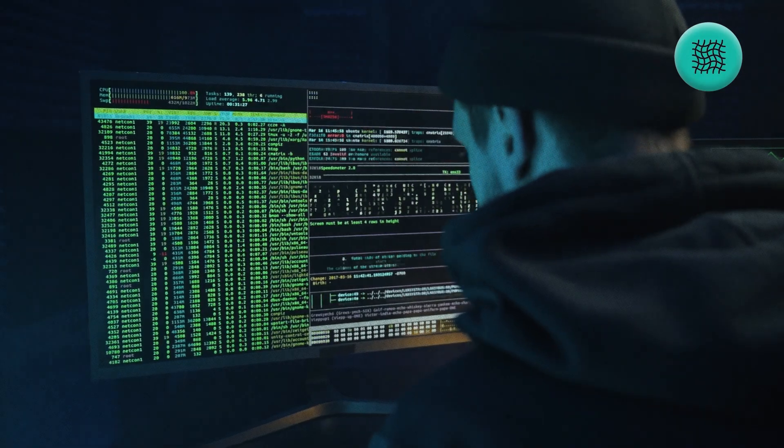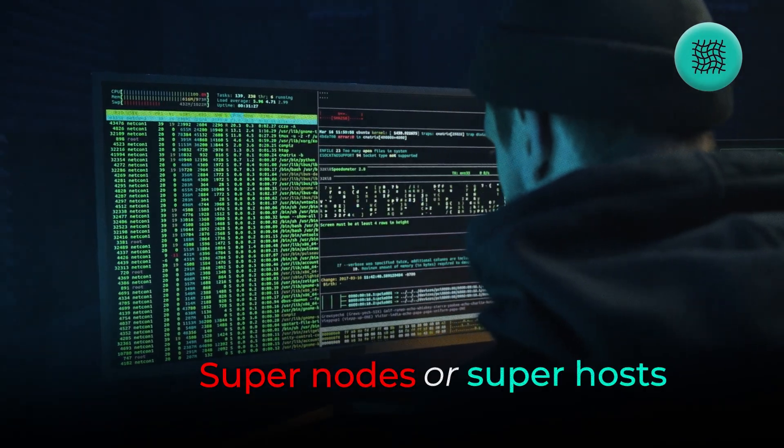What we're talking about today is how they go about compensating people for doing that. Within the Qubic proof-of-work system, we end up with a two-layer model for solving the proof-of-work problems. First of all, we have the computers, which are like super nodes or super hosts for the network, and they're responsible for running the network.